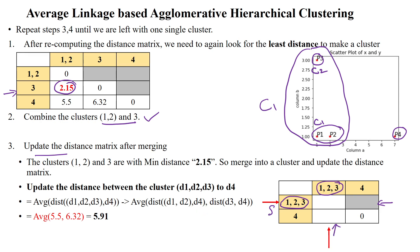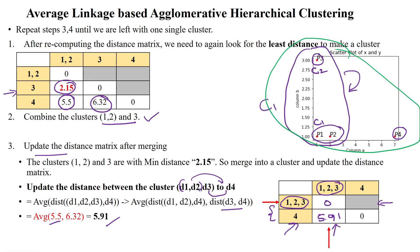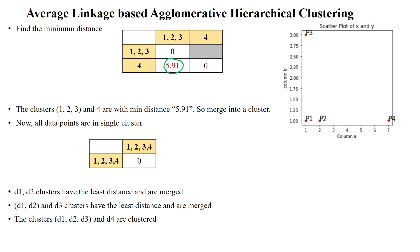We find the distance between cluster {1,2,3} and data point 4. For this, we calculate the average of D{1,2} to D4 (which is 5.5) and D3 to D4 (which is 6.32), giving an average of 5.91. The value 5.91 is written in the updated distance matrix, and the distance of the cluster to itself is 0. Since only data point 4 remains, we combine it with the existing cluster at distance 5.91, forming a single cluster of all four data points.